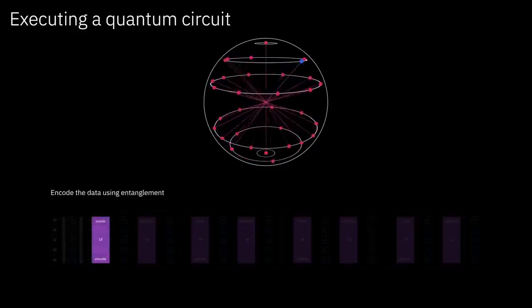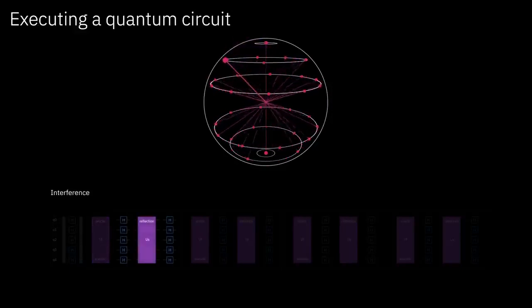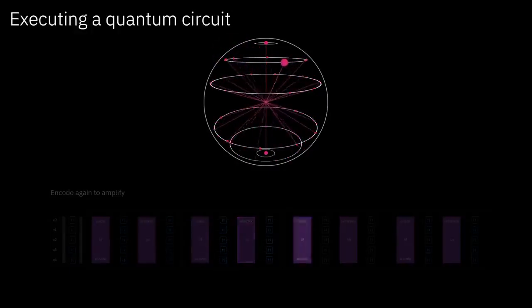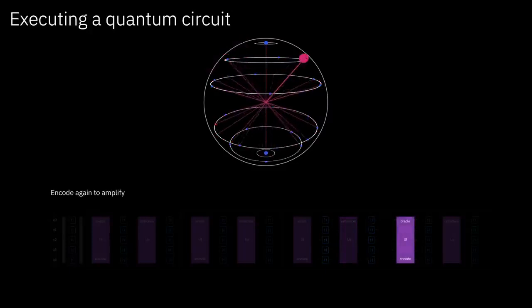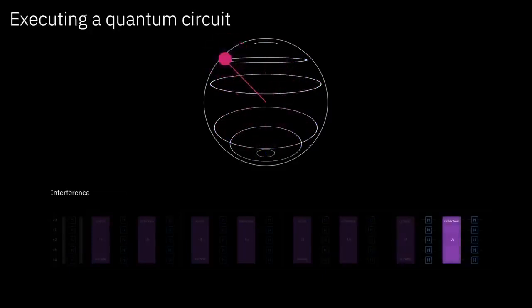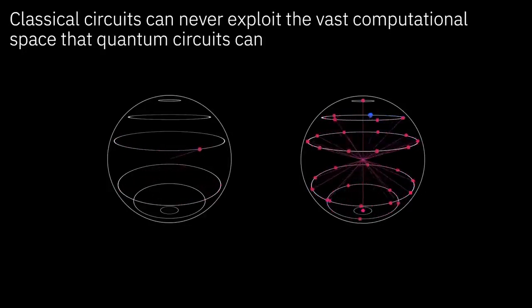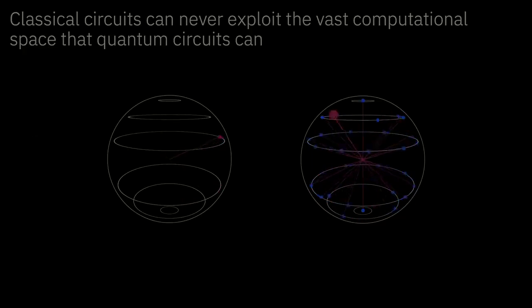We have these superposition states. Now you're seeing that we get to perform these operations where we do rotations, so here you're seeing blue. We're performing operations of interference. You're seeing some of those little moons getting bigger and bigger in size. That is telling us we're converging to some important answer. And that is how we get finally to the answer. So if we put them side by side, just visually, you can get a sense that a classical circuit can never exploit the vast computational space that a quantum circuit can. The visualizations give you this intuition of the richness with which we can access this large state.